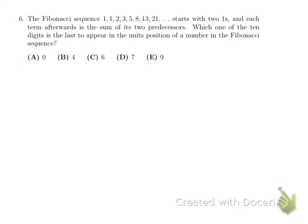Number 6. The Fibonacci sequence given above starts with two ones and goes on. Which of the ten digits is the last to appear in the unit position? So, let's try to write them down. Here we have zero, one, two, three, four, five, six, seven, eight, nine.